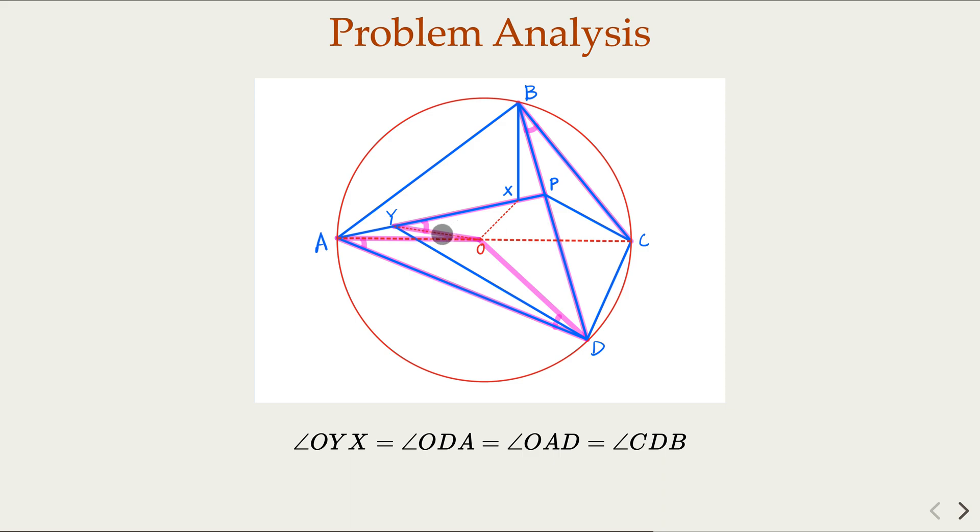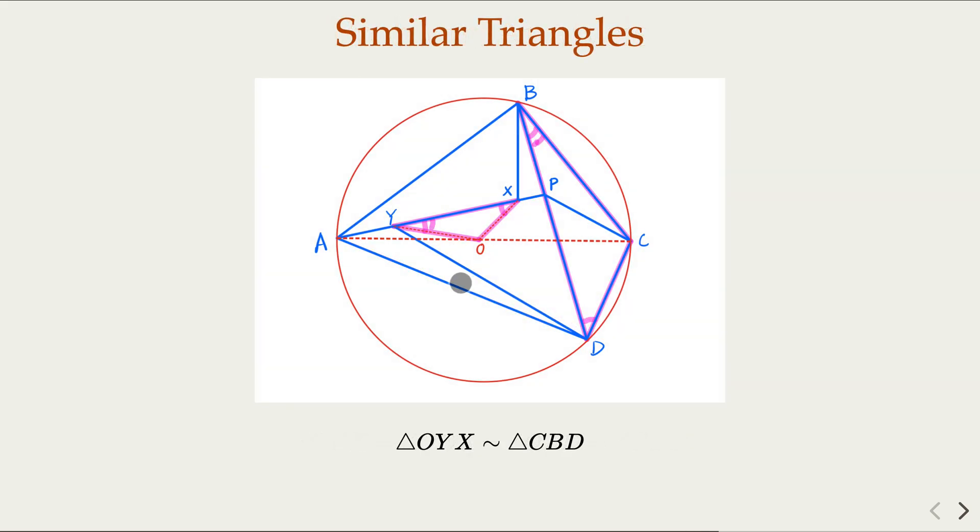Now you have spotted the similar two triangles. These two are similar because all the angles are congruent with each other. This equals this, that one equals that one. Now we need to argue the ratio is one to two.